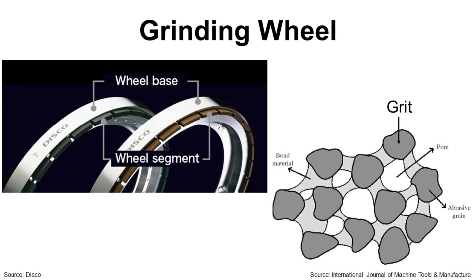Another key parameter of wafer backgrinding is the grinding wheel. The grinding wheel consists of a field base and field segments. The field segment grinds the wafer, and it has 3 elements: abrasive grain, bond material, and pore. Abrasive grain is also called grit, and its size determines grinding performance.